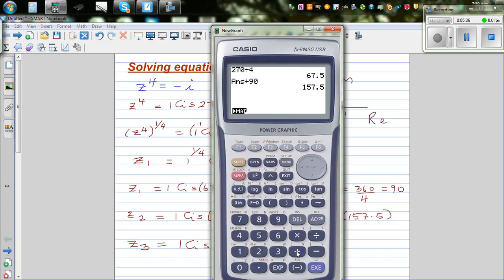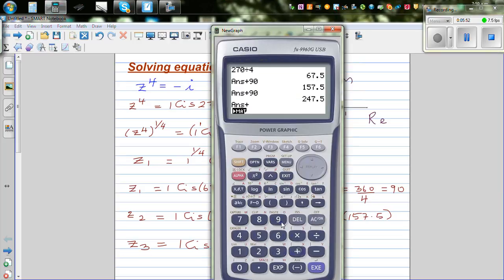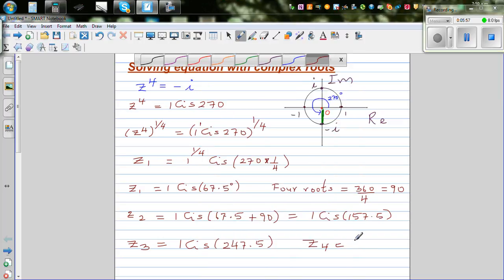And z3 would be 1 cis 157.5 plus 90 which equals 247.5. And your z4 would be 247.5 plus 90, which is 337.5. So this is 1 cis 337.5. You can write this in radians.